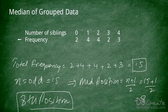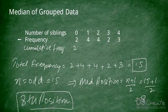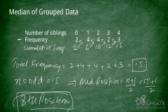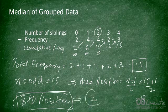Now we build the cumulative frequencies: 2, then 2 + 4 = 6, then 6 + 4 = 10, then 10 + 2 = 12, then 12 + 3 = 15. We're looking for the 8th position. Up to the first group we have 2, up to the second we have 6, and up to the third we have 10 — so the 8th value must fall in the third group, which corresponds to 2.